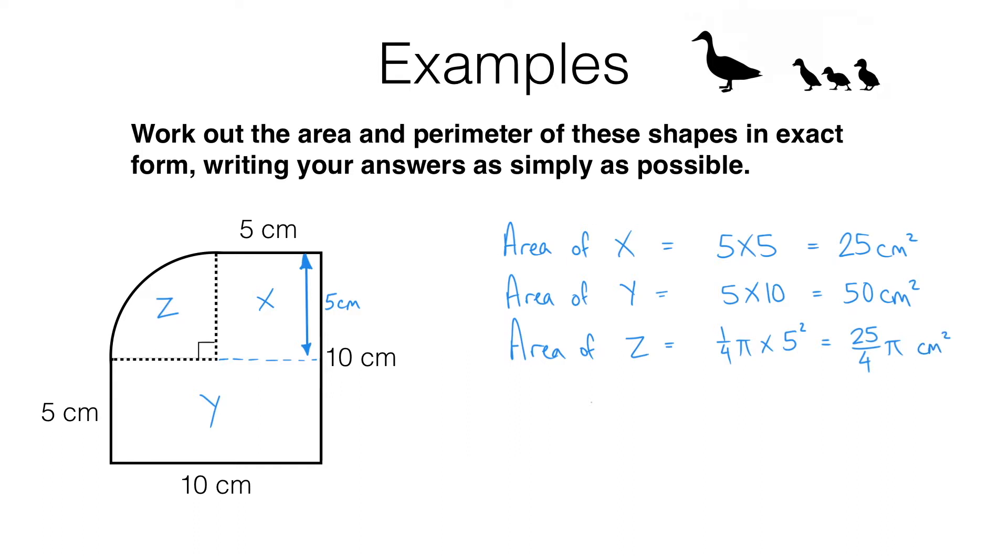The total area is what I get when I add all of these up. Now I've got two numbers that I can add up, 25 plus 50, which makes 75, and this number here, if I work it out on a calculator, is going to be something with an infinite decimal expansion. So I'm going to leave it as a multiple of pi. So the total area equals 75 plus 25 quarters of pi.